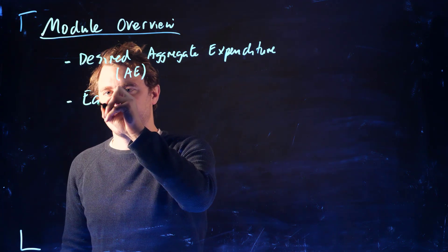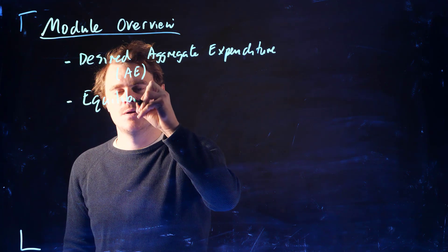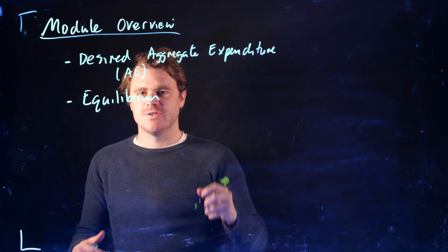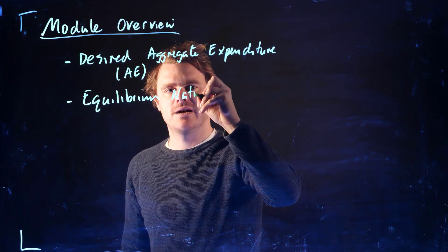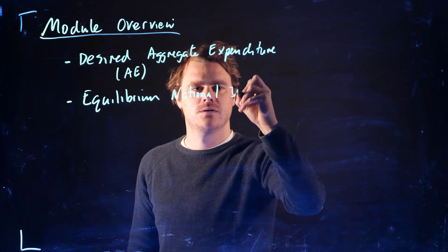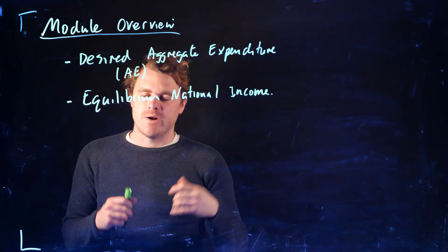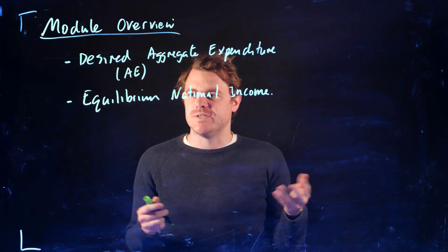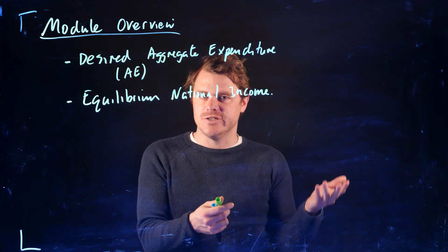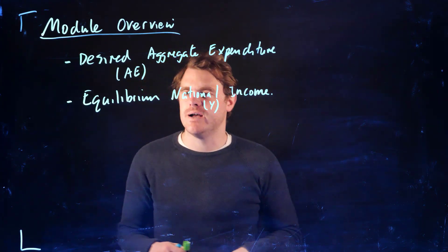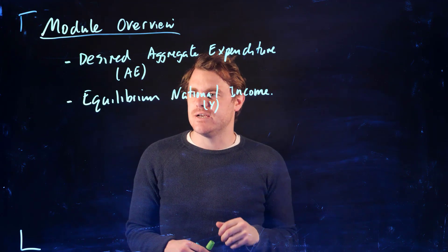We're going to talk about equilibrium in our macroeconomic model, so equilibrium national income. Think about output or GDP. How do we come up with an equilibrium amount of national income? Remember, Y is national income, the actual amount we see in our society.